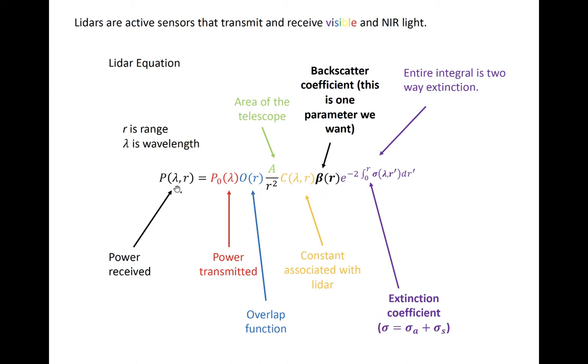The power received is of course directly proportional to the power transmitted. It also scales with the area of the telescope, and inversely squared with the range. The yellow term is a lidar constant that is a function of properties of the lidar itself, such as pulse length, and sometimes the telescope area and the transmitted power are wrapped into this lidar constant.